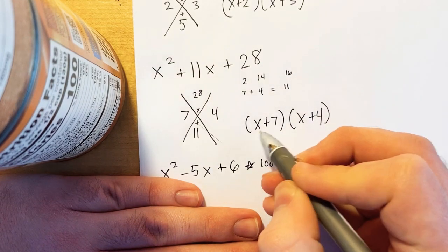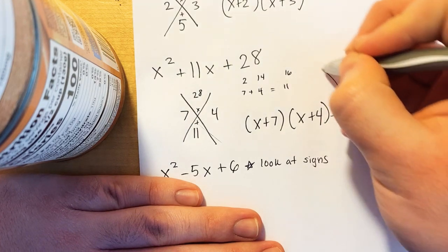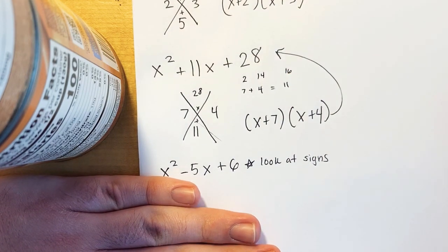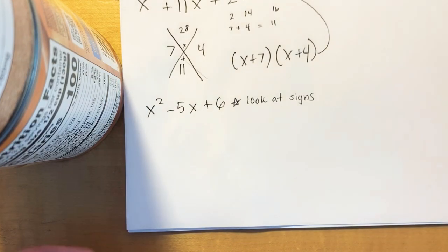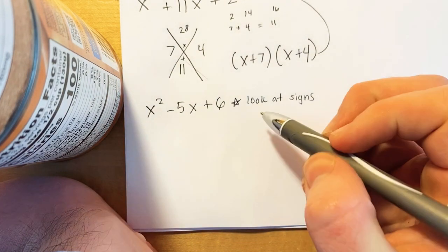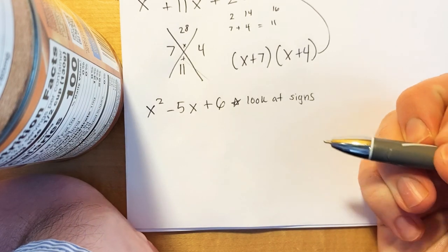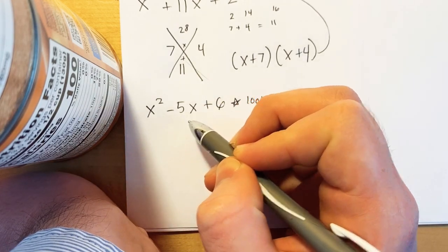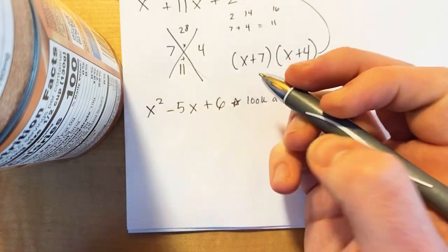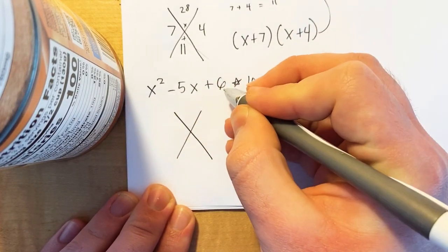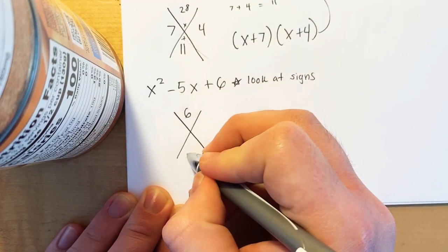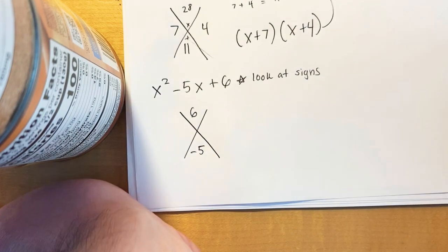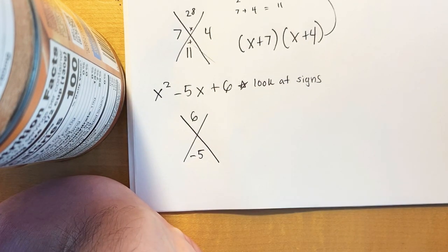We know that x plus 7 and x plus 4 is equal to the equation up here. Now we're going to make it a little bit more difficult by adding some negatives. Our next one is x squared minus 5x plus 6. We have to look at the signs — we notice a negative number in the middle, but the last term is positive. We make our X, write positive 6 on top, and keep the negative at the bottom, writing negative 5.